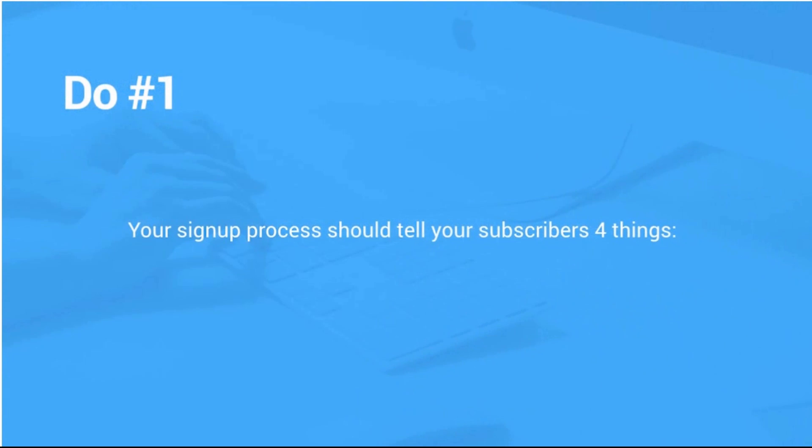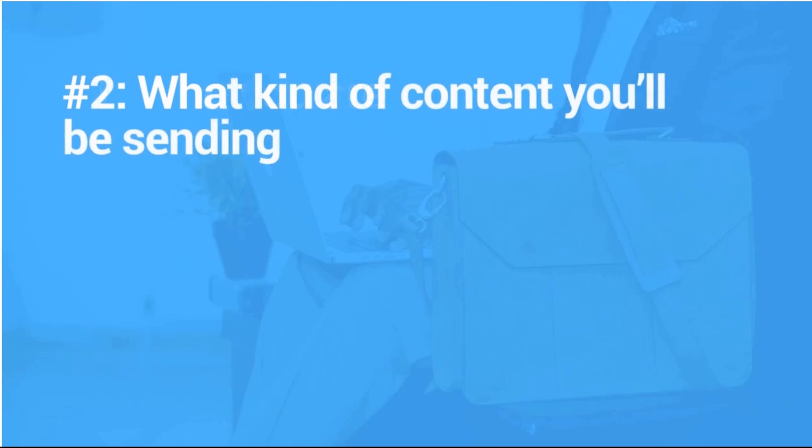Do number one: your signup process should actually tell your subscriber four things when they're signing up. Number one, it should tell them who you are. You want to make sure that you use your own logo or branding if you have it, your company or blog's full name, and a description of you or your business that tells them what you really do.